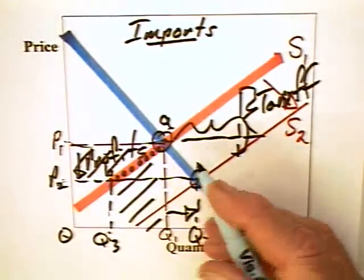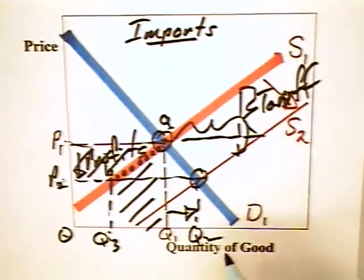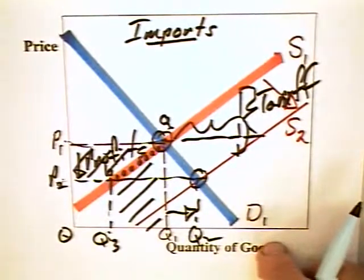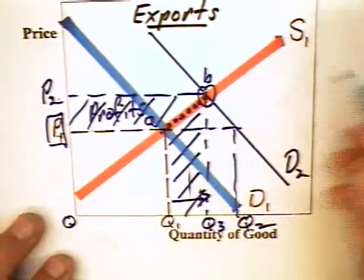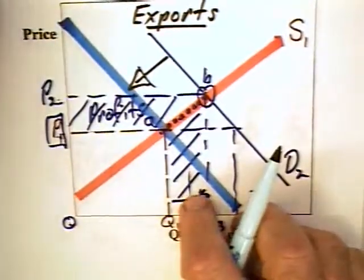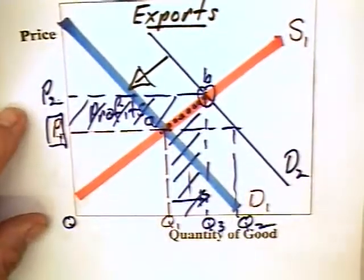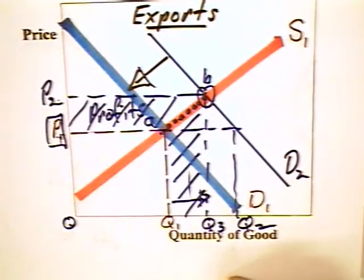But the problem is that once you start restricting imports into this country, the other countries with whom we may be trading no longer have the dollars in order to buy the goods. And the problem here is that once you start restricting imports, you should also expect exports to go down. Why? Because if countries are not selling to us, they cannot be buying from us.